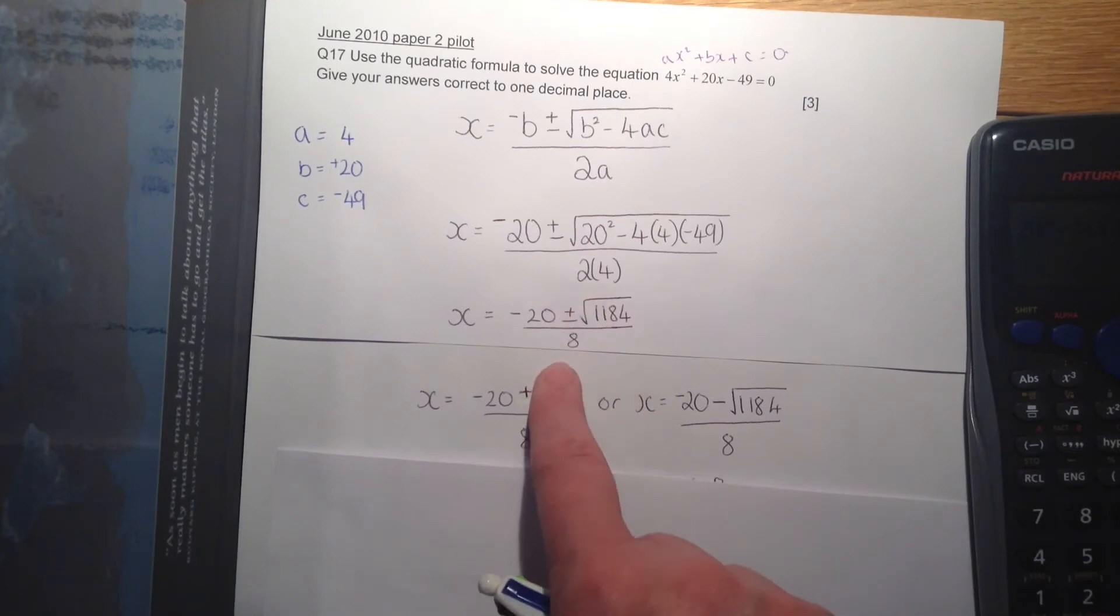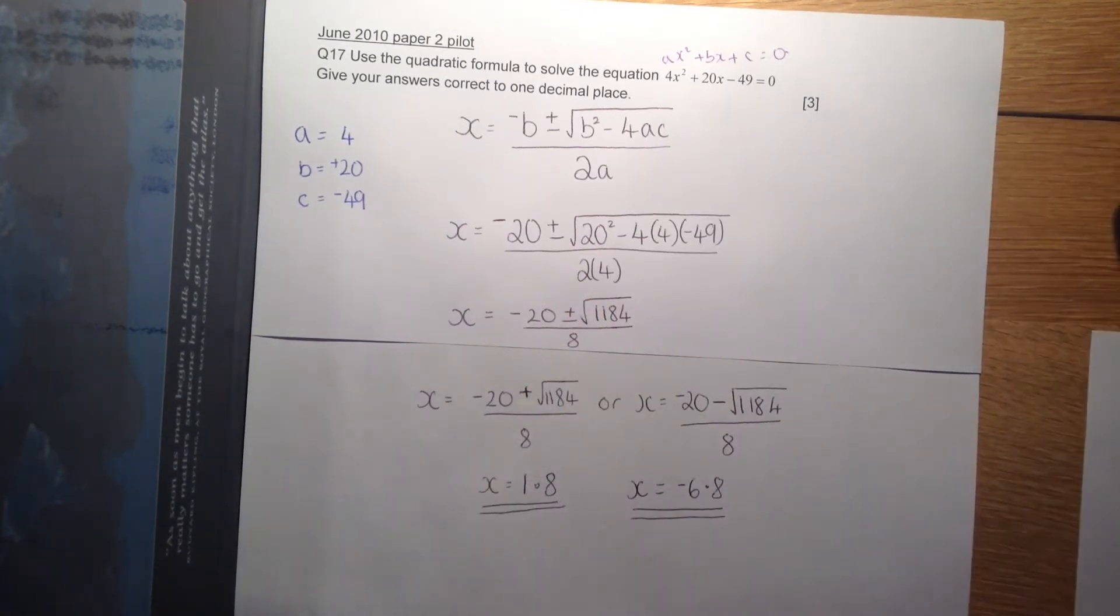And I've also worked this out to get the 8. Now splitting the two up, so we've got minus 20 plus root 1184 over 8, or minus 20 minus root 1184 over 8.